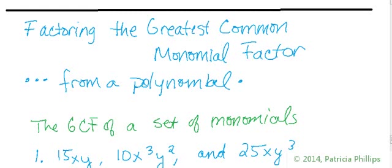Hello and welcome back. Today we're talking about factoring — specifically factoring the greatest common monomial factor from a polynomial. When you look at this chapter in your math textbook, you might notice there is more than one type of question. You could see 'factor out the greatest common factor,' and you also could see 'find the greatest common factor.'